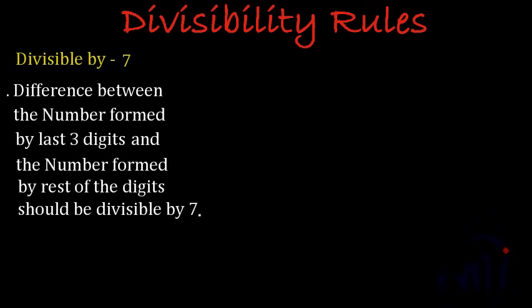Today we are going to learn the divisibility rule of 7 — that means how to check if a number is divisible by 7 or not. This divisibility rule actually applies to numbers which are 4 digits or more.